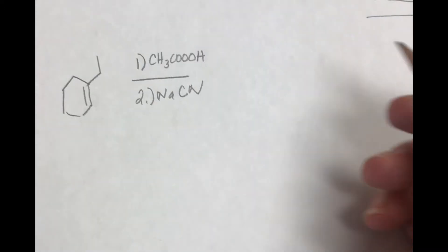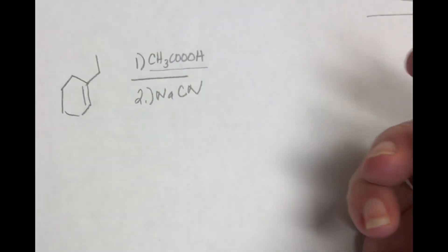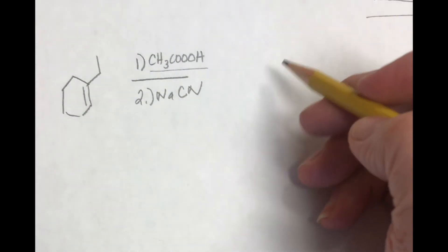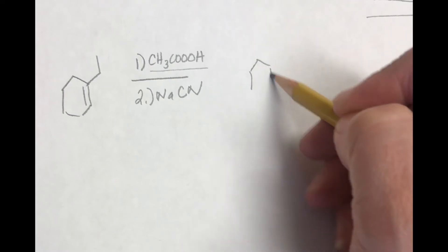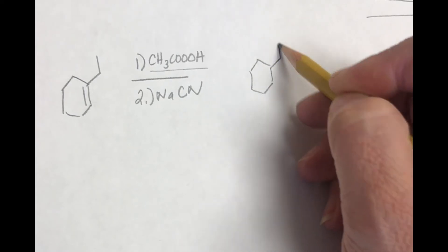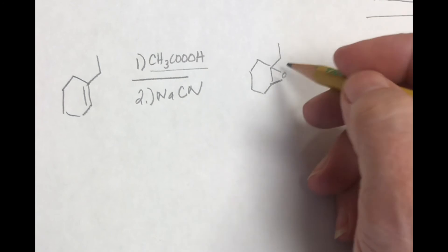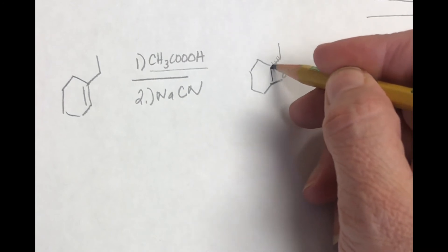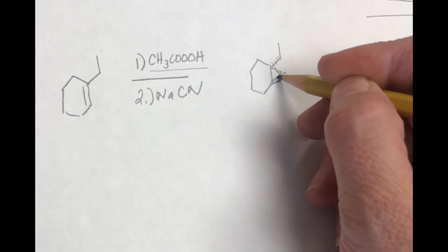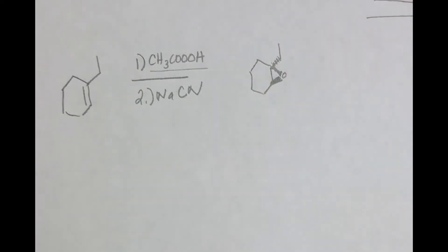Here's the second reaction. And that first step is also peroxy acid. And so we're going to just simply form the epoxide. So the way that that looks is this way. And if we want to show dimensionality, we can see that that epoxy oxygen is coming up and our ethyl group is going down.